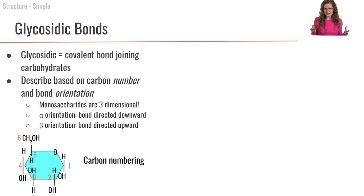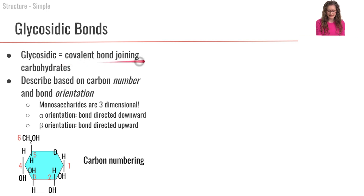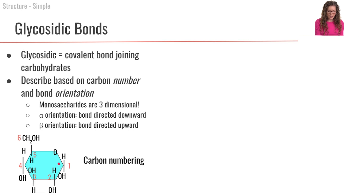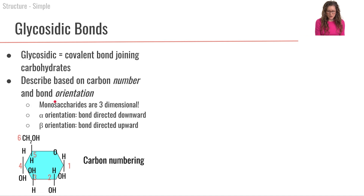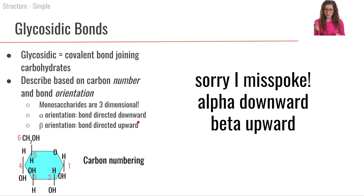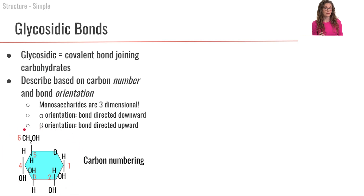Now I've been alluding to the fact that we can take these monosaccharides and bind them together to form disaccharides or larger, more complex carbohydrates. The way that we bind them together is through glycosidic bonds. A glycosidic bond is a covalent bond that is joining monosaccharides together. We can describe these glycosidic bonds based on two factors: the carbon number — referring to which carbon on the monosaccharide is part of the bond — as well as the bond orientation. So far I've been showing you all of these monosaccharides in two-dimensional representations, but really they are three-dimensional compounds. Here is an image where I've taken a glucose molecule and numbered the carbons for you.